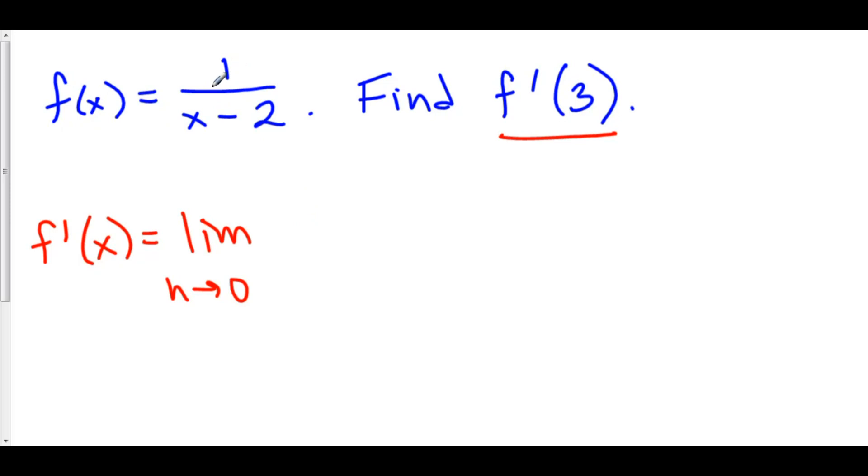We have 1 over stuff minus 2. That means we're going to have 1 over stuff minus 2, minus the function, which is 1 over x minus 2, and all over h.